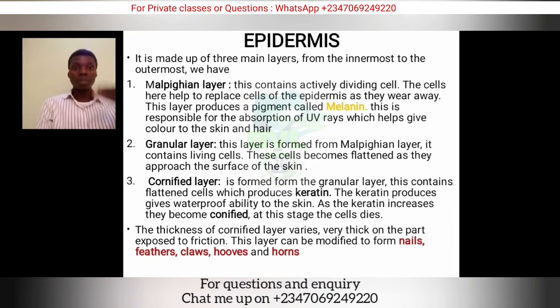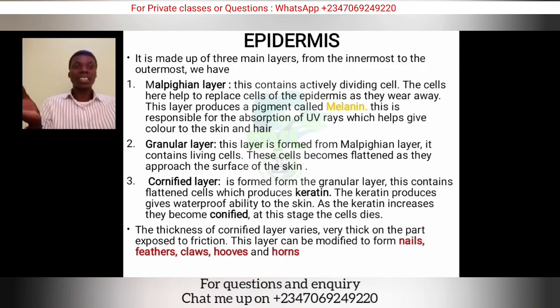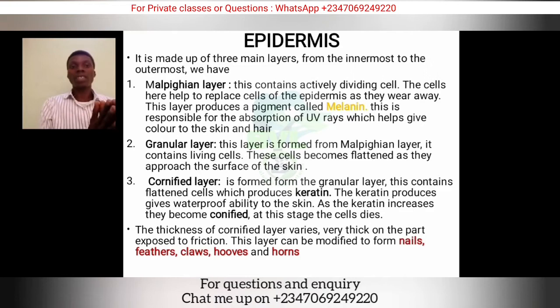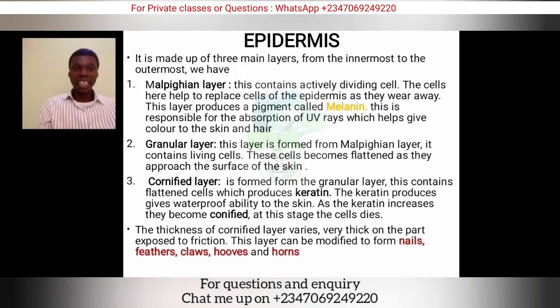The epidermis is made up of three main layers — actually about five when subdivided — but we'll focus on three from innermost to outermost: Malpighian, Granular, and Cornified. The Malpighian layer is the actively dividing layer; these cells help replace the cells of the epidermis. It contains a pigment called melanin, which is responsible for the absorption of ultraviolet rays and gives color to the skin and hair. The more melanin you have, the more UV rays are absorbed.